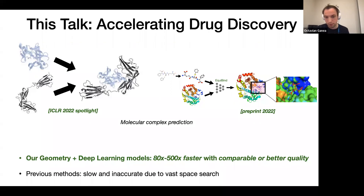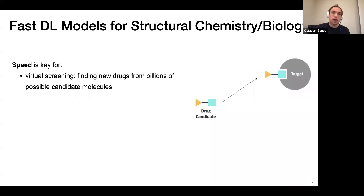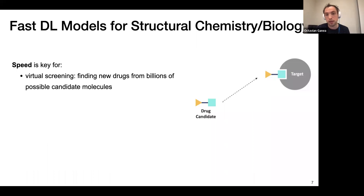I'm going to show how we can combine geometry and deep learning to achieve speedups between tens to hundreds of times compared to existing commercial and open source software, often achieving even better quality. Previous methods are slow and inaccurate because they face a vast search space, very hard to explore using simulations or Monte Carlo search. If we have very fast models, we can use them for virtual screening — scanning datasets like ZINC of hundreds of millions or billions of candidate molecules, and seeing computationally which drug candidates attach to a specific target, such as a cancer kinase.